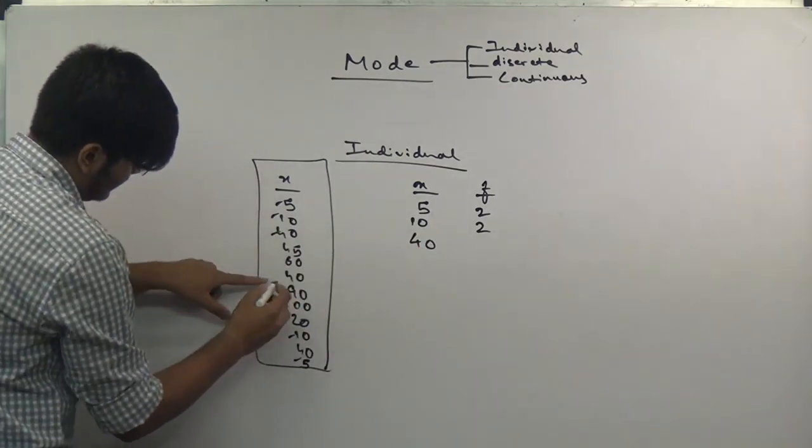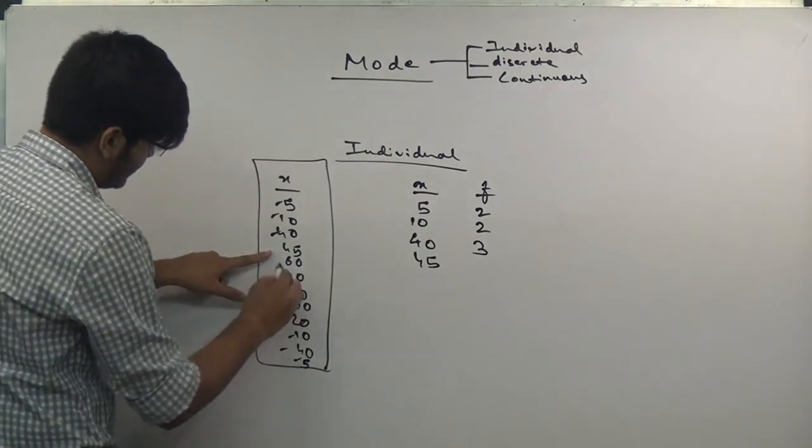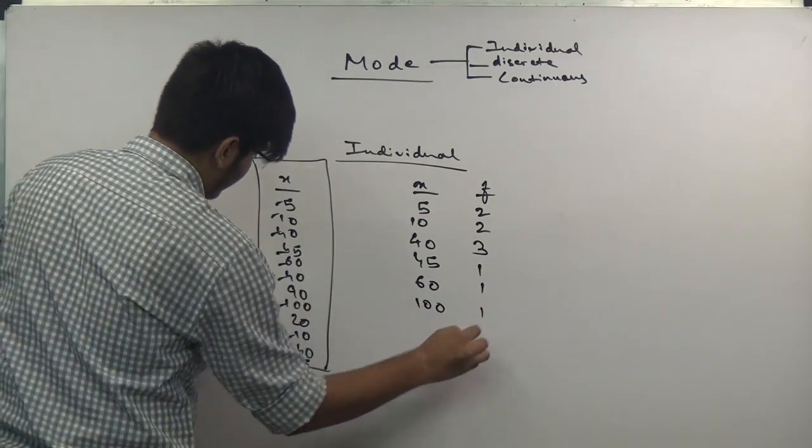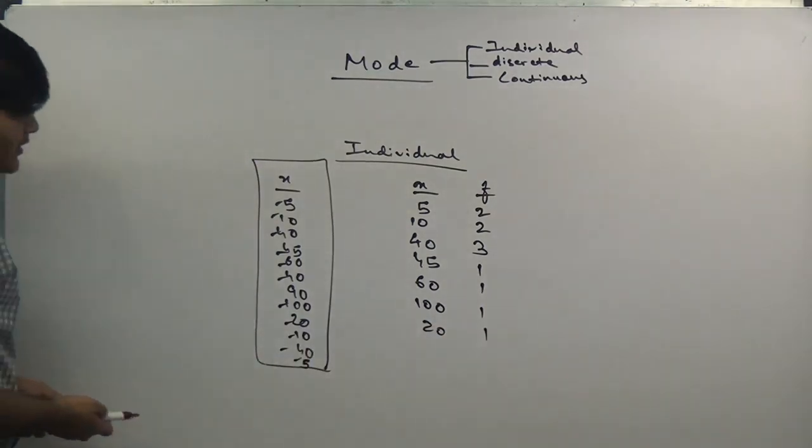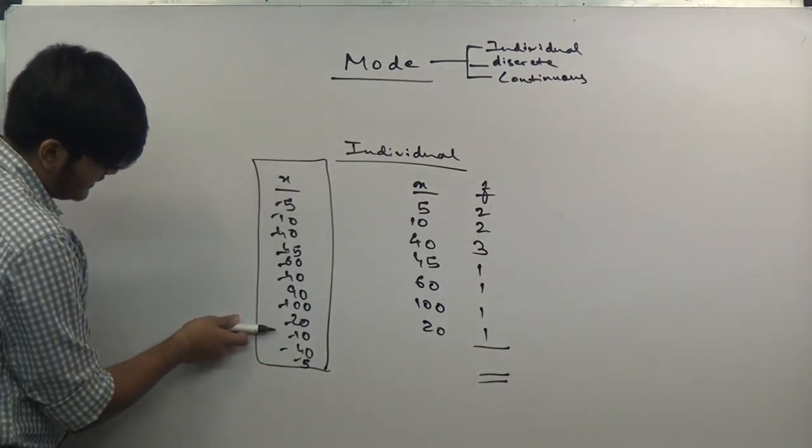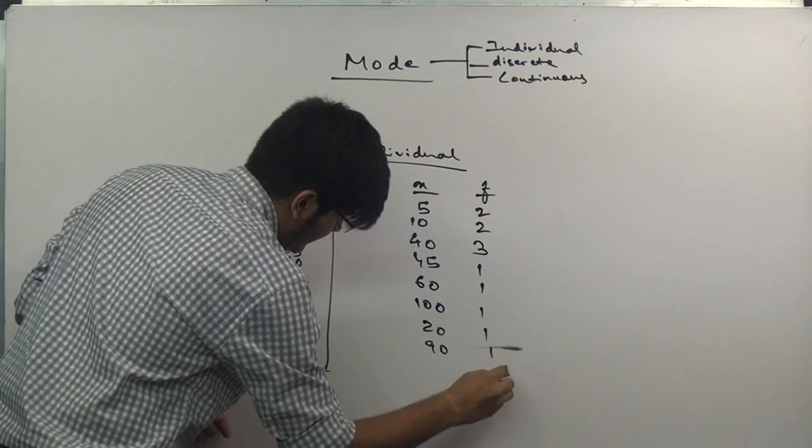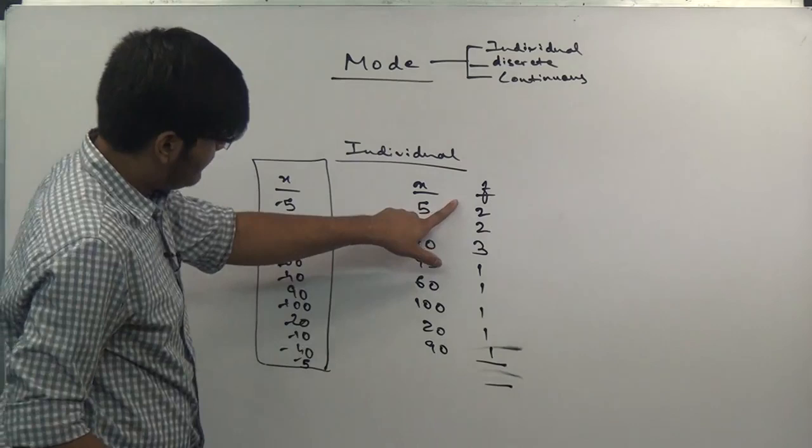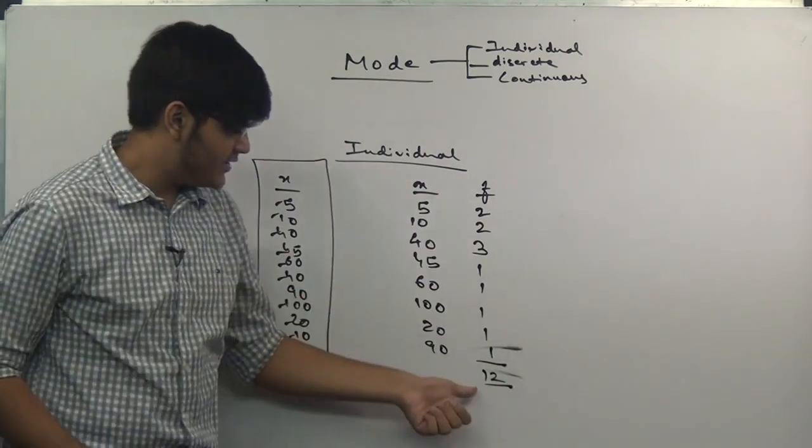40 appears 1, 2, 3 times. 45 is only once, 60 once, 100 once, 20 once, 90 once. You can count the observations: 1, 2, 3, 4, 5, 6, 7, 8, 9, 10, 11, 12. We have taken all observations into consideration.